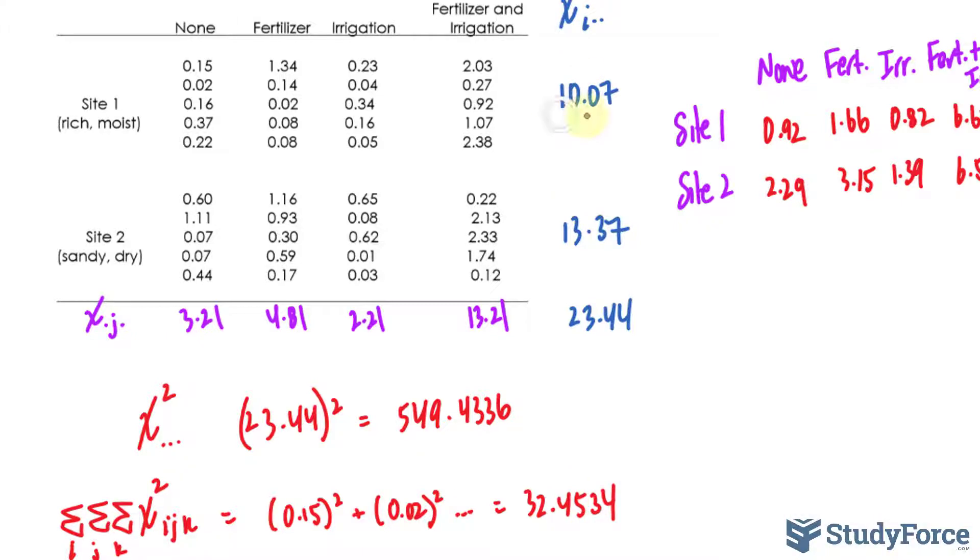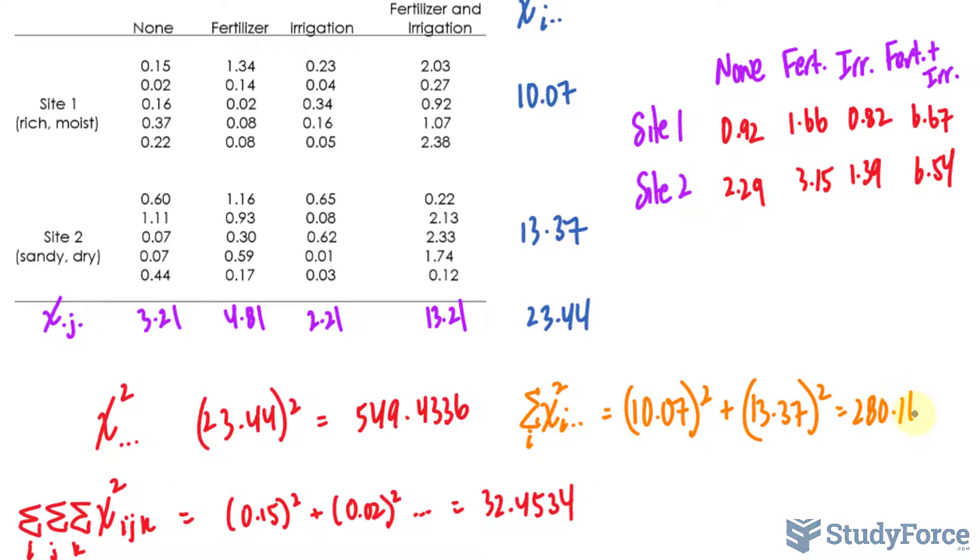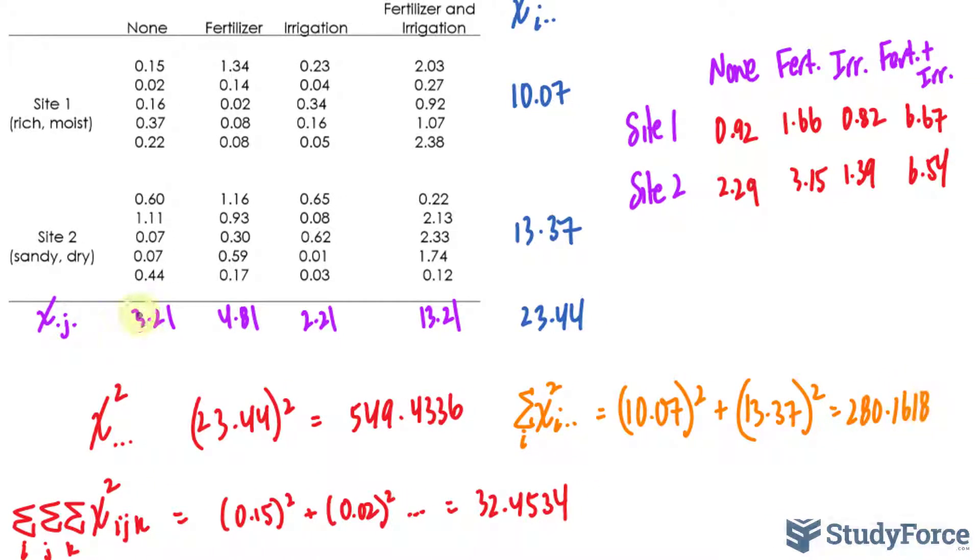So technically we have 0.15 raised to the power of 2 plus 0.02 raised to the power of 2 and so on all the way until we finish. The value you should get is 32.4534. You will also need to do the same for these two values. So I'll take 10.07 raised to the power of 2 plus 13.37 raised to the power of 2 and that's represented as x to the power of 2, i dot dot, and the sum, the value is 280.1618.